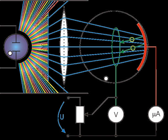For a given metal and frequency of incident radiation, the rate at which photoelectrons are ejected is directly proportional to the intensity of the incident light.